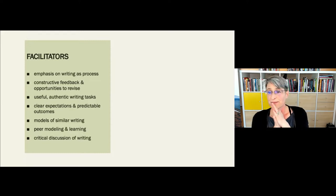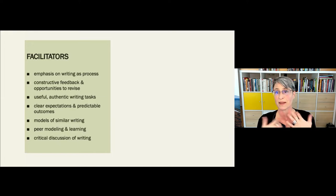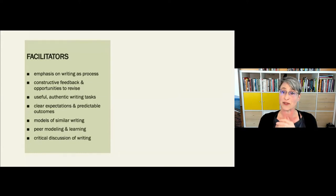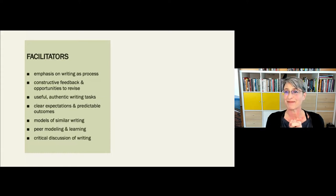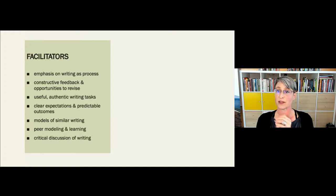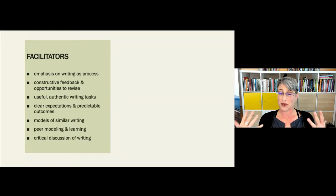Useful and authentic writing tasks involve giving students work that matters to them — helping them choose topics or shape projects so they feel ownership over it. Giving them meaningful real work, having them work with real data, producing real genres like grant proposals or elevator talks that they'd actually use outside the classroom. Clear expectations and predictable outcomes — giving them rubrics, being transparent about what you're asking them to do and why, making sure they understand how and why they're being assessed. And then models of similar writing, models of success, and models of common pitfalls.